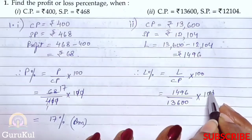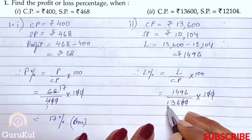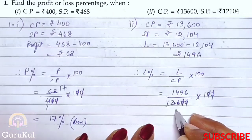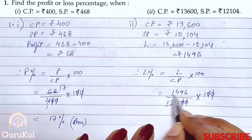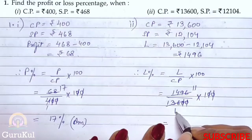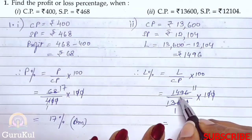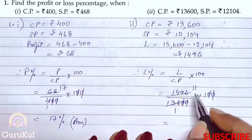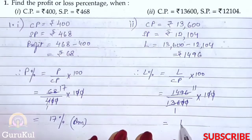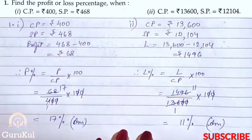Let me first reduce the zeros. So 1,496 divided by 13,600 into 100. After simplification: 136 ones are 136, and 136 into 11 gives us 1,496. So we got the answer as 11% — that is the loss percentage for Part 2 of question number 1.